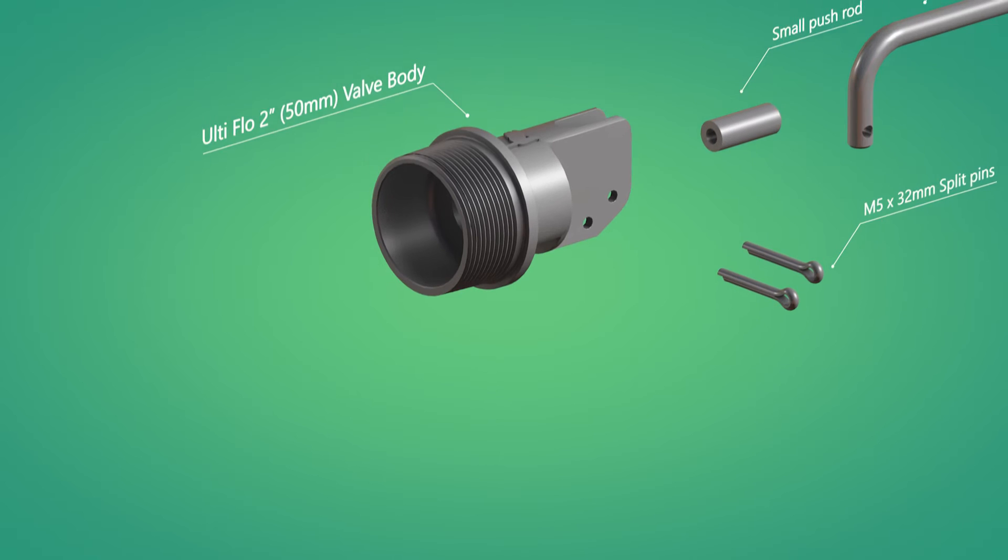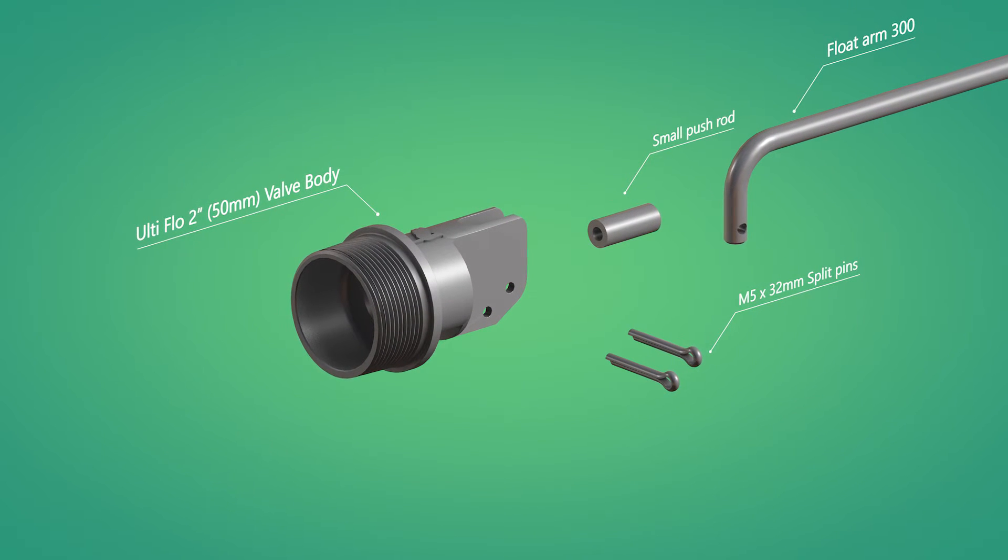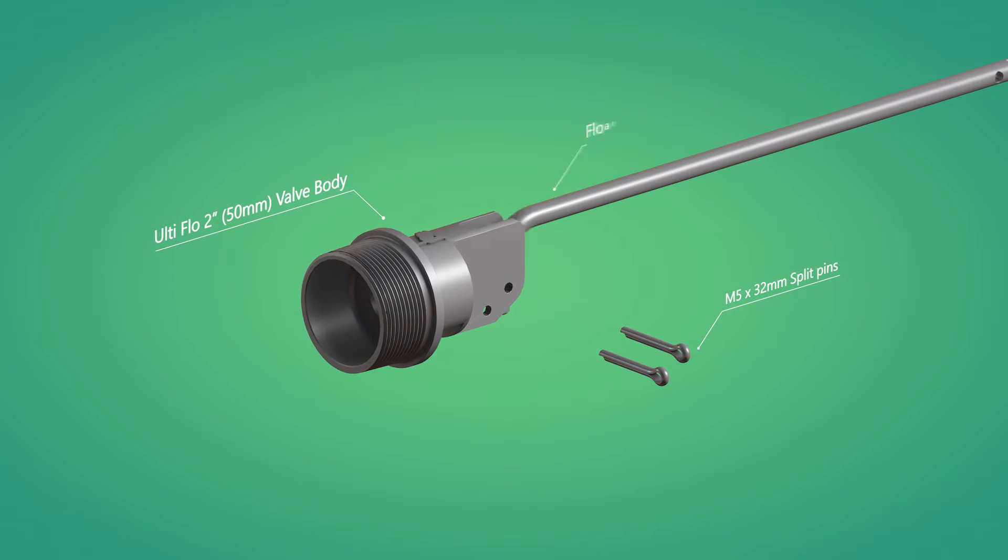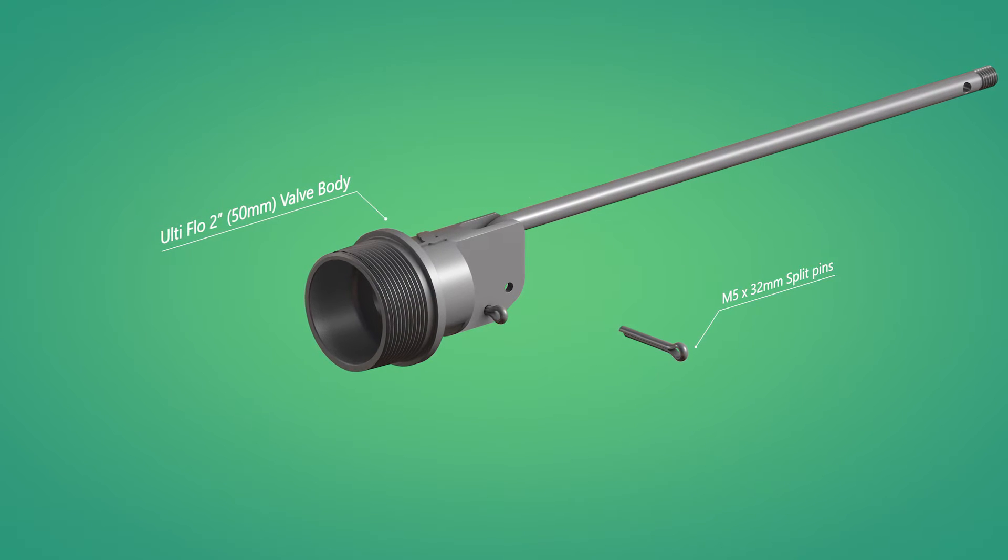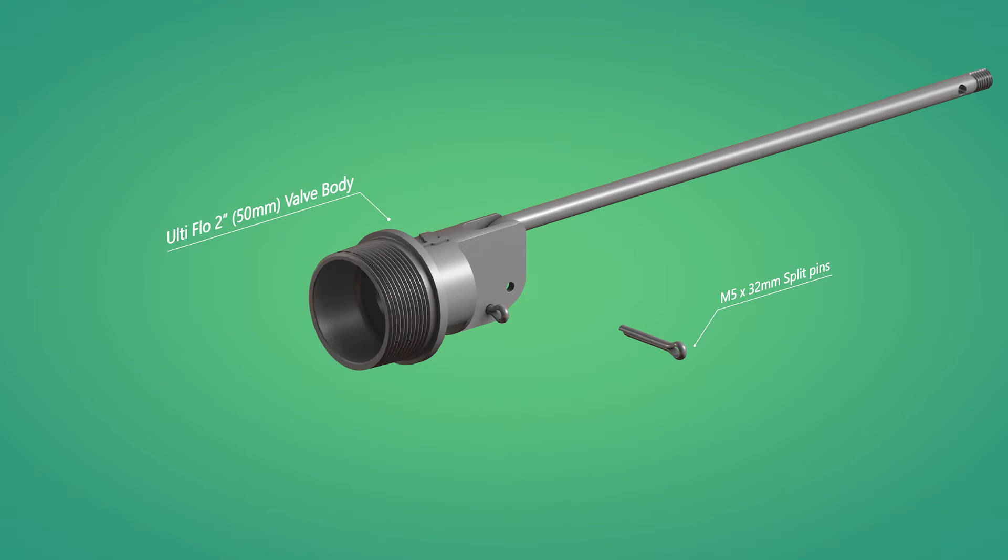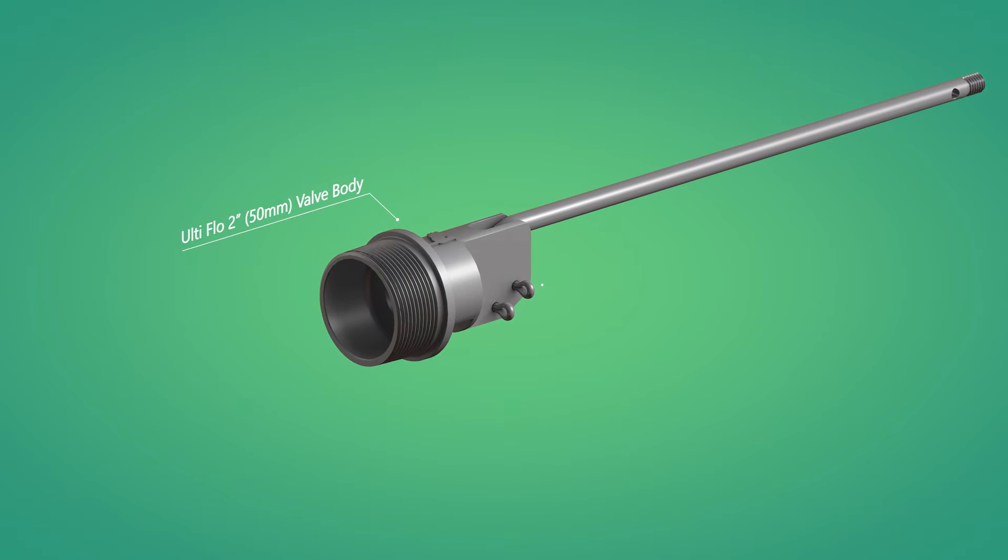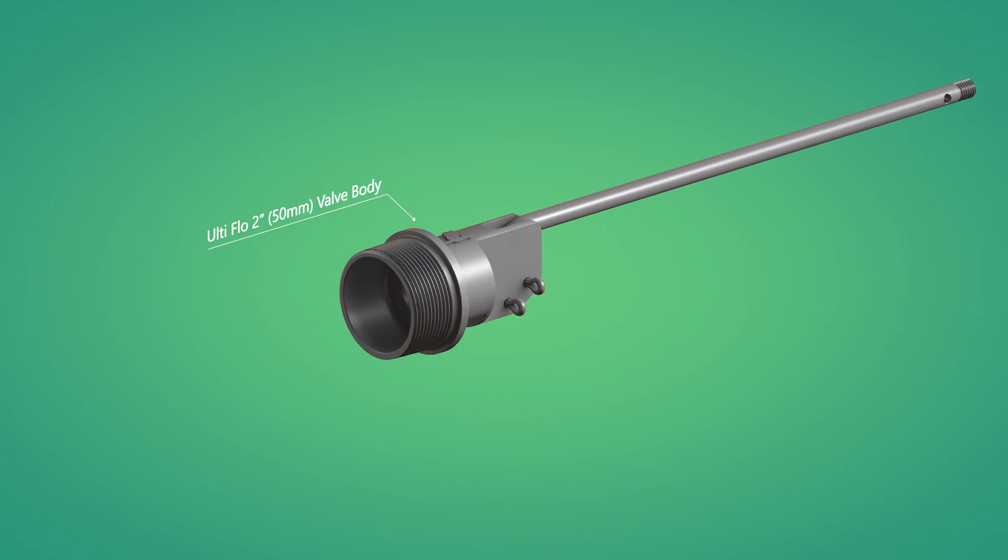The push rod simply slides in behind and engages the small shaft on the rear of the washer seat. The pivoting float arm is then installed behind the push rod and held in location by one of the split pins. The second split pin is only there to support the float arm in those installs where the valve could experience direct stock pressure.